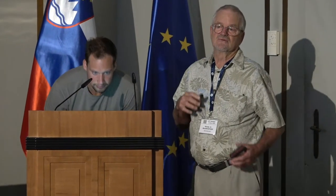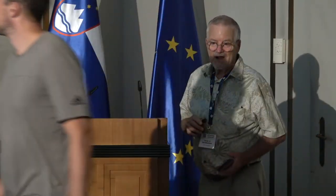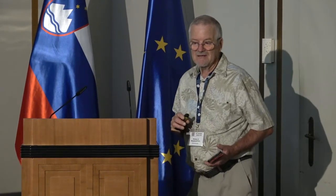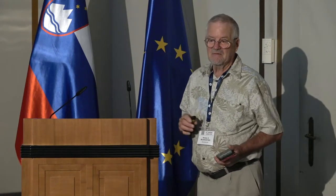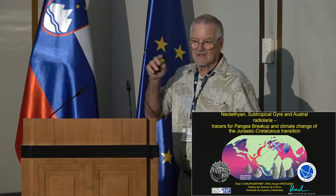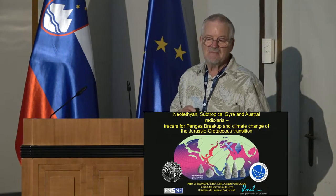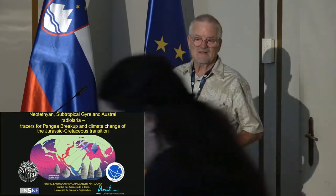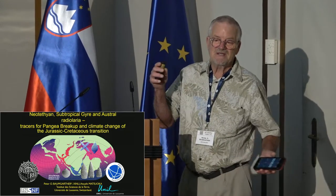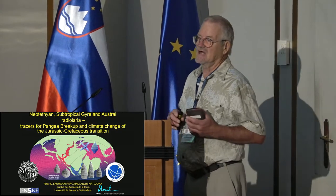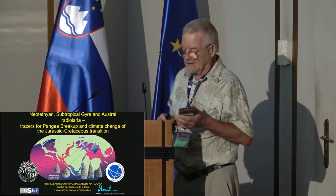Now we go to some interpretation which is based both on the Radiolarian record from site 765 in the Argo Basin, but also on all available published Radiolarian occurrences around Antarctica in the Southern Hemisphere. There are several sites where we find the same Radiolarians. We don't have complete sequences, but we have some samples, and so this allows us to sketch an area where we have these Austral Radiolarians.